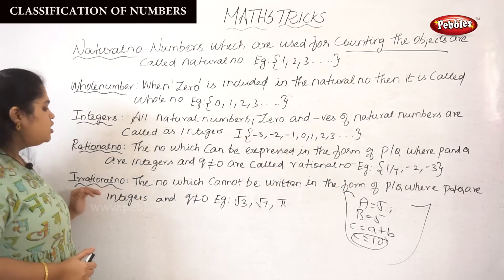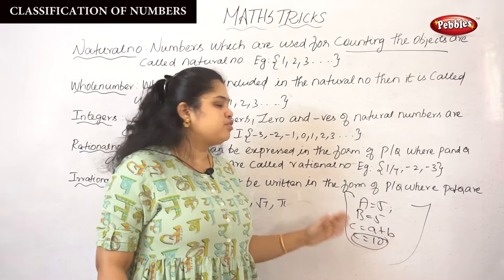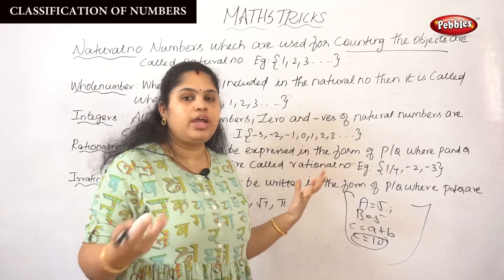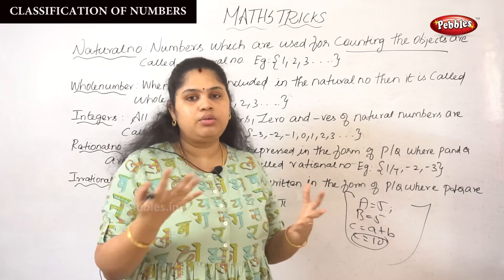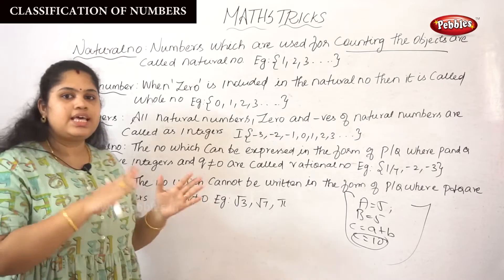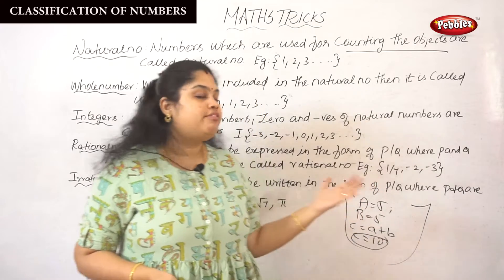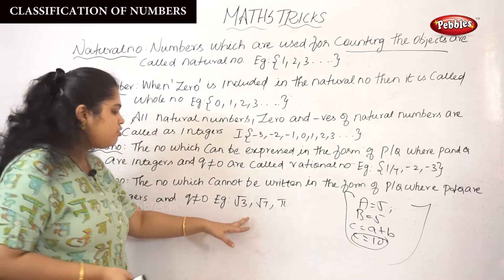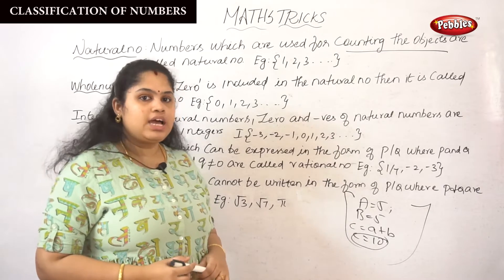Next, irrational number. Whereas a rational number can be written in the form P/Q, an irrational number is exactly opposite. The number which cannot be written in the form of P/Q, where P and Q are integers and Q is not equal to 0, is called an irrational number. Examples include √3, √7, and π.